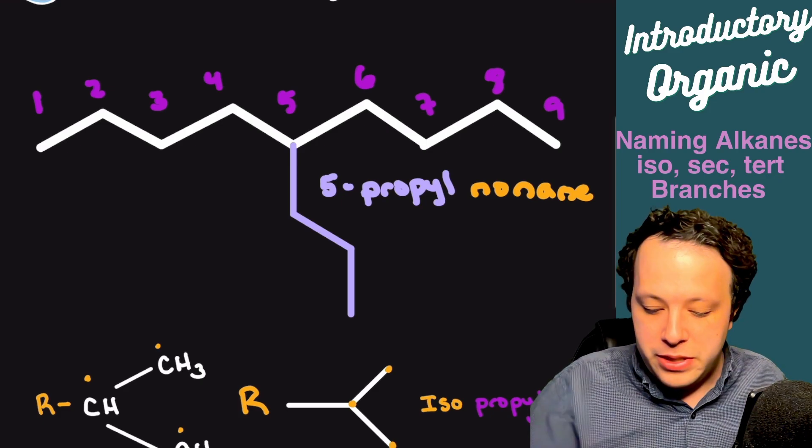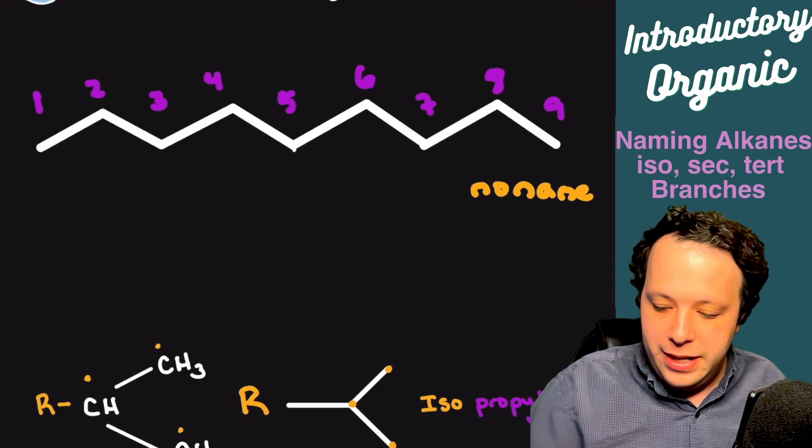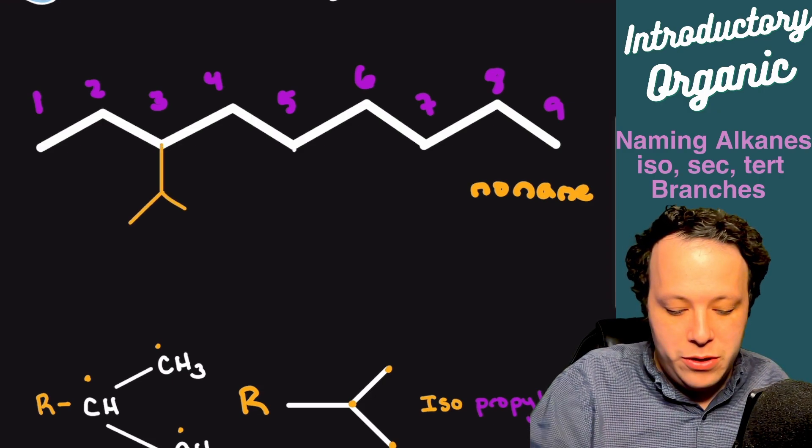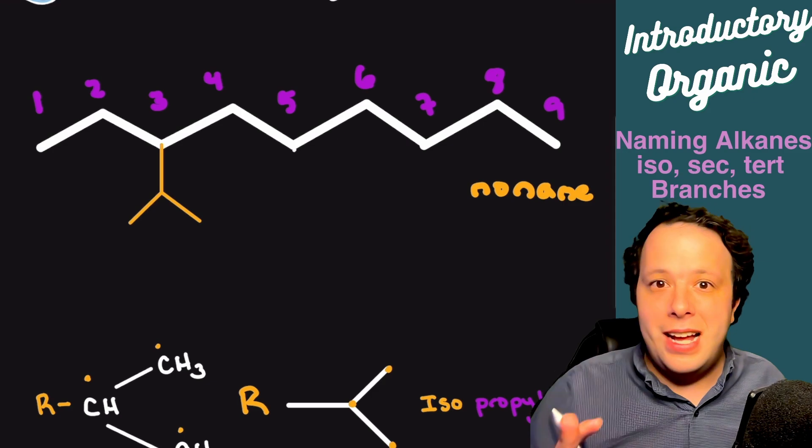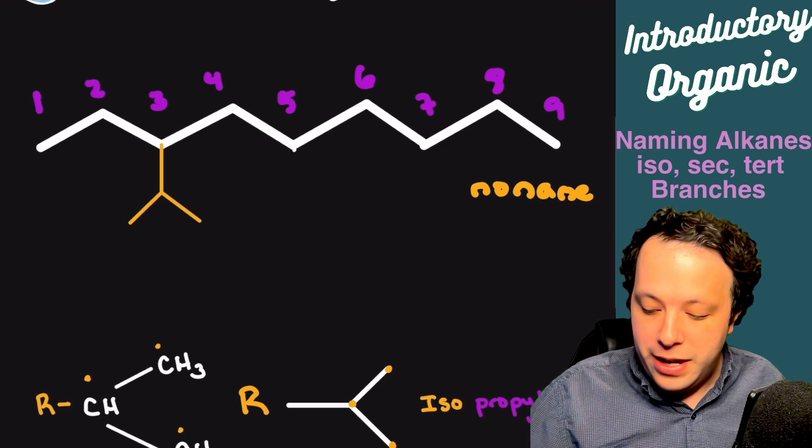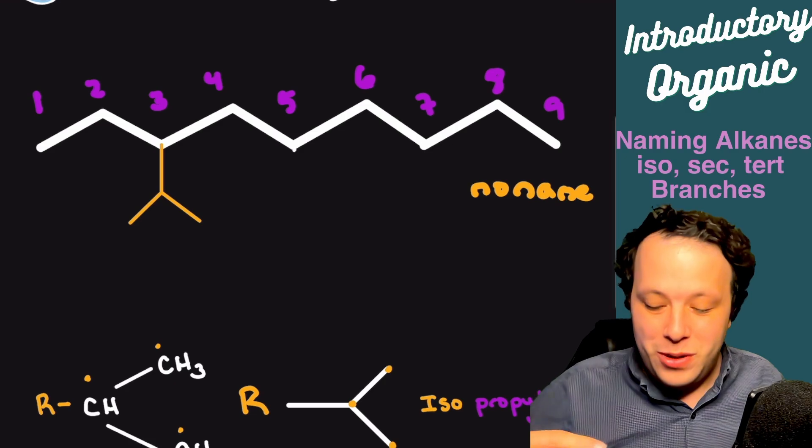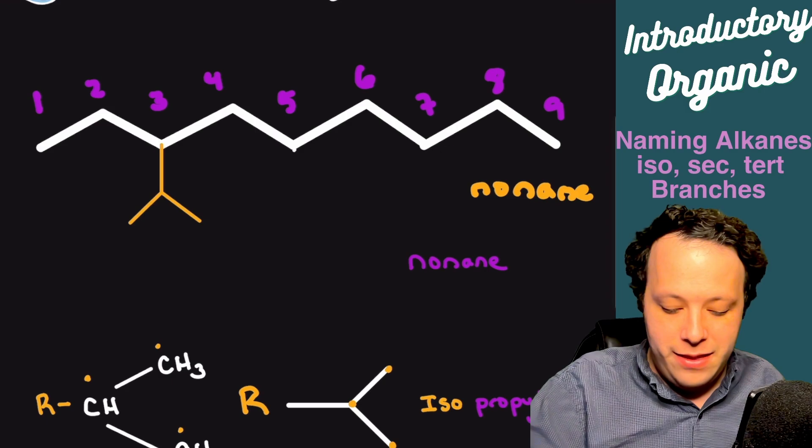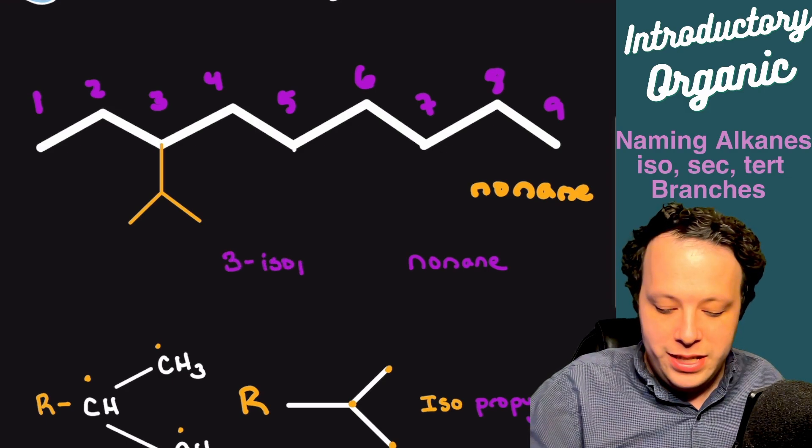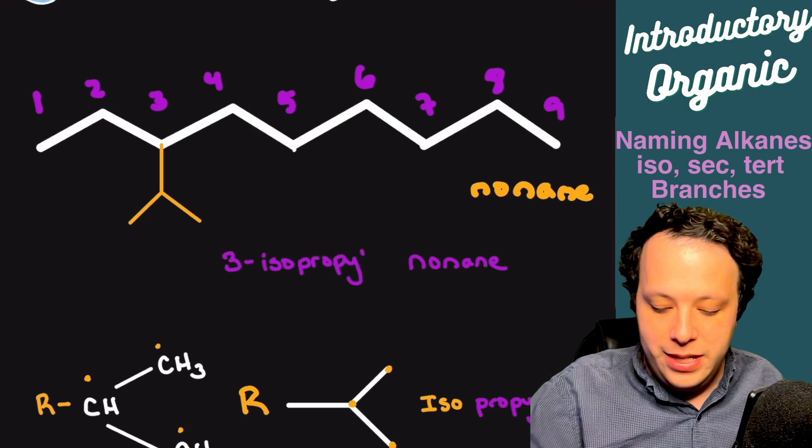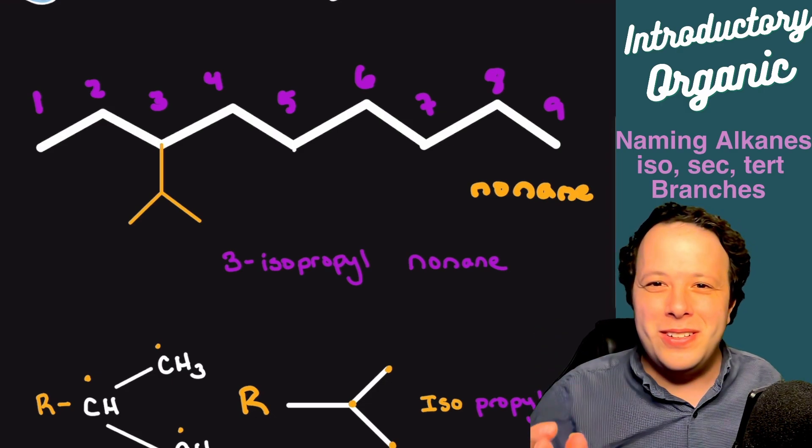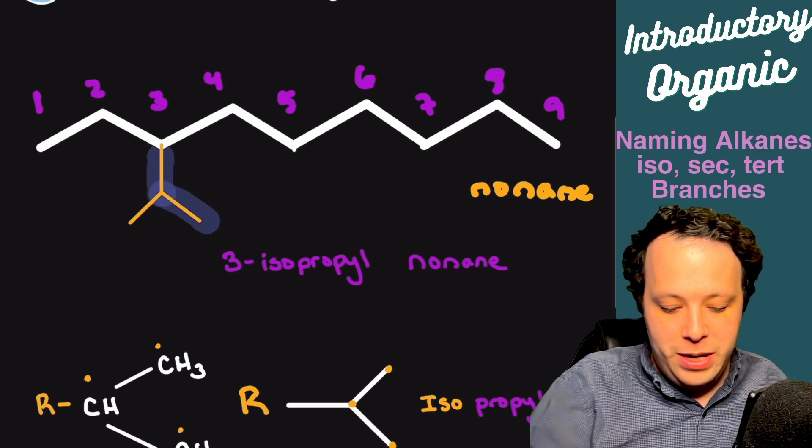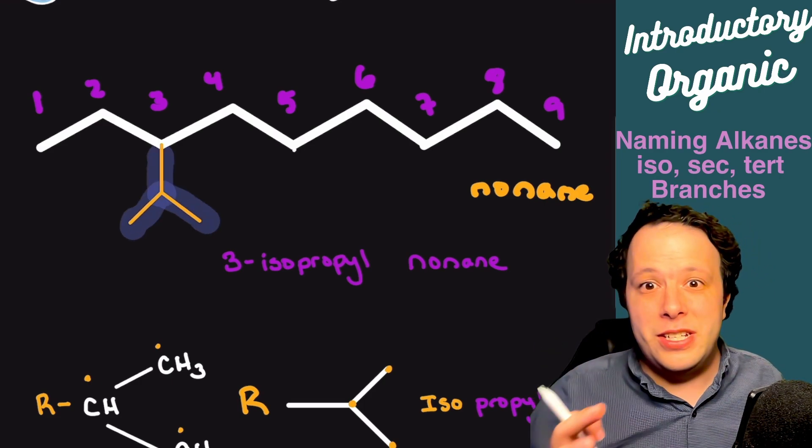If you ever put this in a structure, it allows it to get a little bit closer to the ends. Let's say if I had my nonane and I put it on carbon number three and I have that split. We have nonane, which is that nine-member chain, and we put where that isopropyl is, which is at the third position. You would say three-isopropyl nonane. Whenever you have this special Y shape, that means you have an isopropyl.